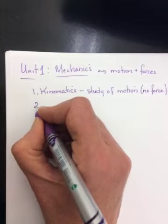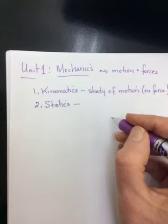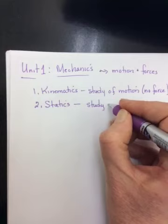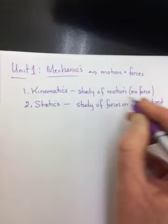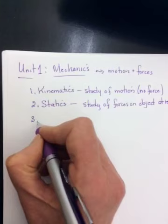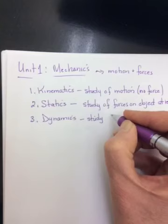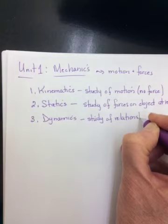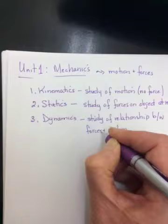The second part is called statics. It comes from the same root as stationary. This is the study of forces on objects at rest. So the top one is looking at movement, no forces. The second one is looking at forces, no movement. The third one puts them together. It's called dynamics. Dynamics is the study of the relationship between forces and motion. How much force do you need to put on an object to get it to stop? What happens if you put this big of a force on the object? What happens to the motion?